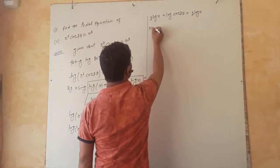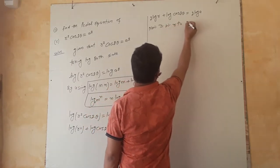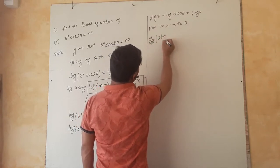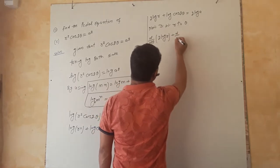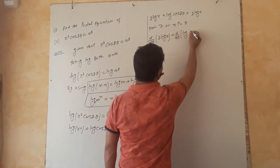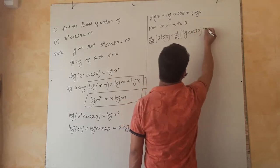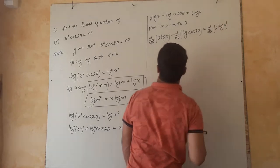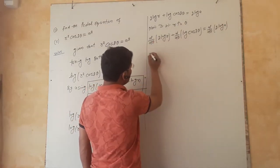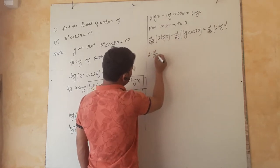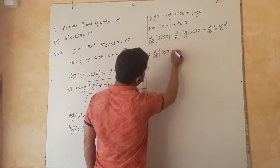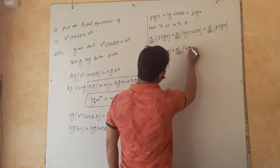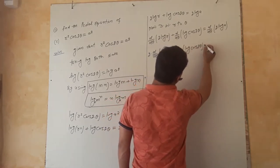Now differentiating both sides with respect to θ: d/dθ of 2 log R plus d/dθ of log cos 2θ is equal to d/dθ of 2 log A. Since 2 is a constant, this becomes 2 · d/dθ(log R) plus d/dθ(log cos 2θ) equals 0, since A is constant.